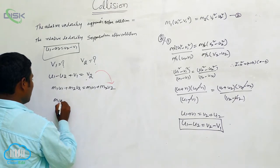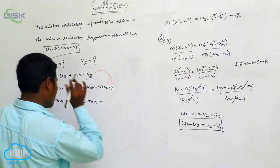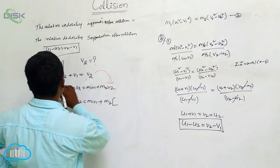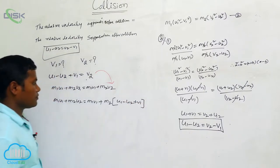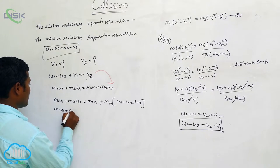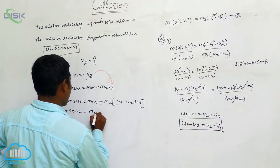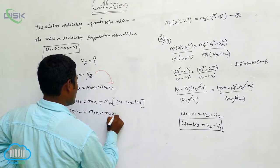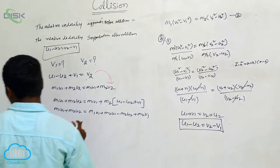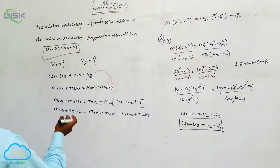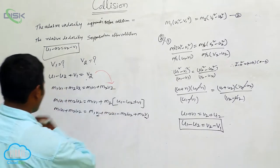What happens after substitution? M1 U1 plus M2 U2 is equal to M1 V1 plus M2 times (U1 minus U2 plus V1). Expanding: M1 U1 plus M2 U2 equals M1 V1 plus M2 U1 minus M2 U2 plus M2 V1. Now V1 appears on both sides — here as M1 V1 and here as M2 V1. Send remaining terms to the other side.